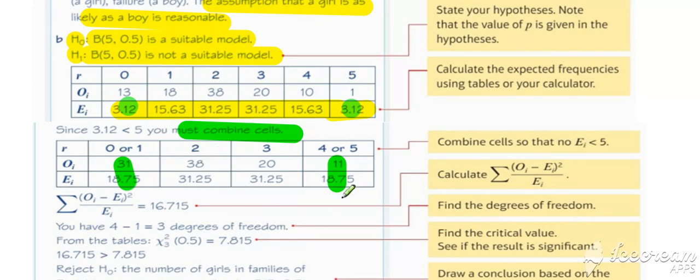Now we're in a situation where we have got our table complete with cells combined. So we can pick off our degrees of freedom. Number of cells, four. Just one constraint because P was given. So three degrees of freedom.